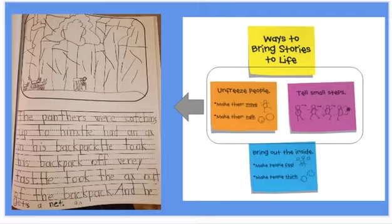This is an example. The panthers were catching up to him. He had an axe in his backpack. He took his backpack off very fast. He took the axe out of his backpack and he gets a net.